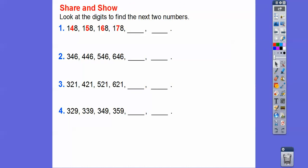Let's do that with these ones. Look at the digits to find the next two numbers. So here, it looks like the only one that's highlighted is the tens digits. So the tens digits increase by one, so 4, 5, 6, 7, so the next one's going to be 188. So 188, and then 198.